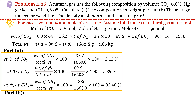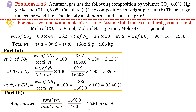In Part (b), we estimate the average molecular weight. Total weight and total moles are already known — total weight is estimated and total moles assumed as 100. The average molecular weight comes out as 16.61 g/mol.